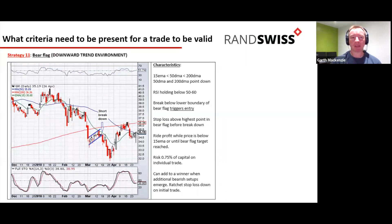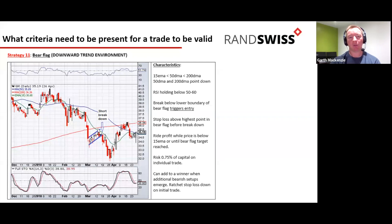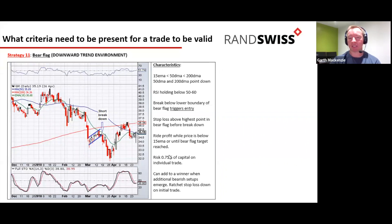The bear flag pattern is a continuation pattern in a downward trend environment. Moving averages should be pointing downwards, particularly the 50-day and 15-day EMA. A break below the bottom of the flag structure triggers a short entry, with a stop above the highest point of the bear flag. Risk 0.75% of capital. Adding to winners on the short side is not easy — just be conscious of that and manage risks carefully.